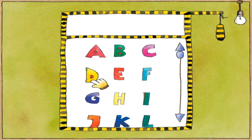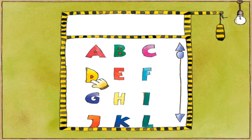Hallo und herzlich willkommen bei diesem wunderbaren Spiel. Zuerst unbedingt total wichtig: dein Name. Dann kannst du später wieder dort anfangen, wo du aufgehört hast. Ich wette drei Regenwärmer, dass du deinen Namen schon selbst schreiben kannst. Such einfach die richtigen Buchstaben auf deiner Tastatur und tippe deinen Namen ein. Wenn du das noch nicht kannst, bitte einfach deine Eltern um Hilfe.